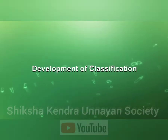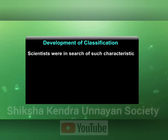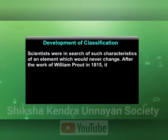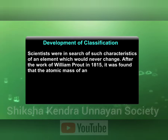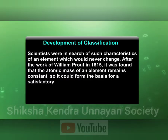Development of classification: scientists were in search of such characteristics of an element which would never change. After the work of William Proust in 1815, it was found that the atomic mass of an element remained constant, so it could form the basis of a satisfactory classification.